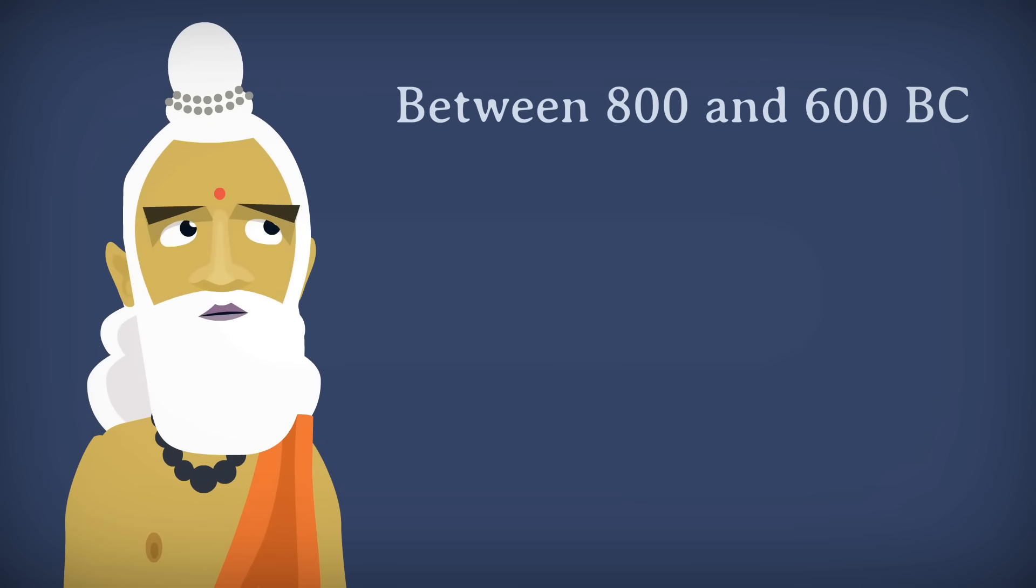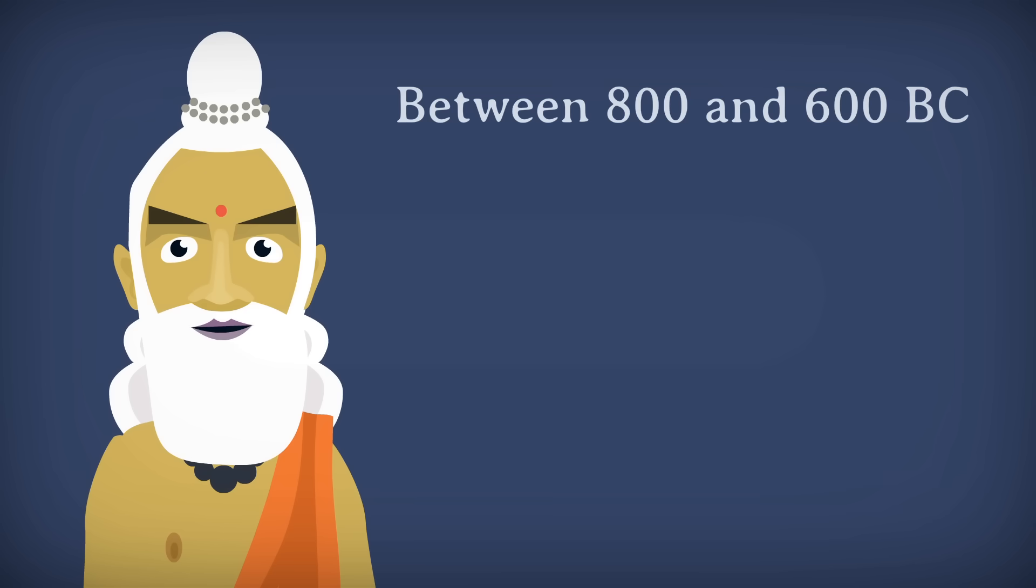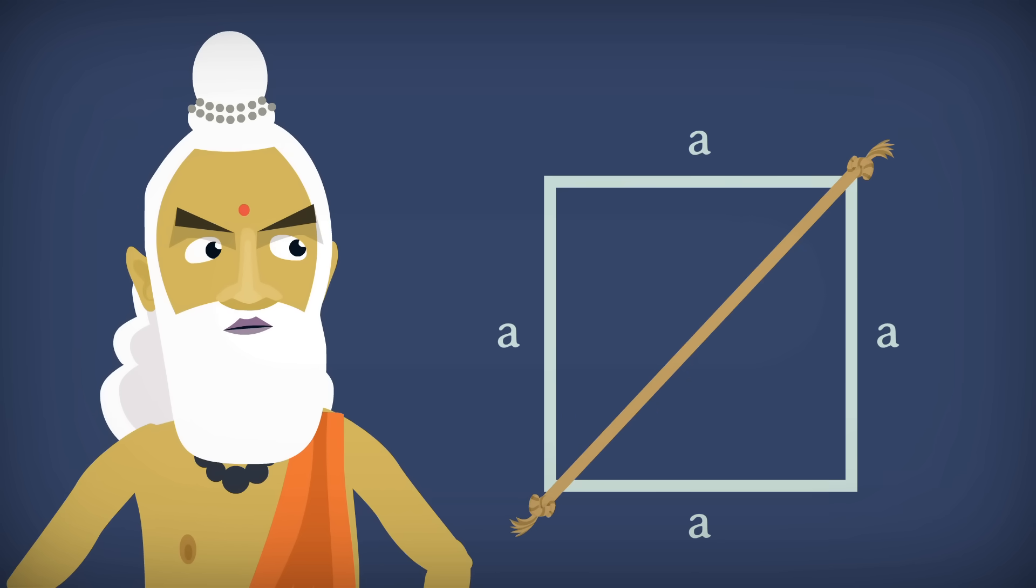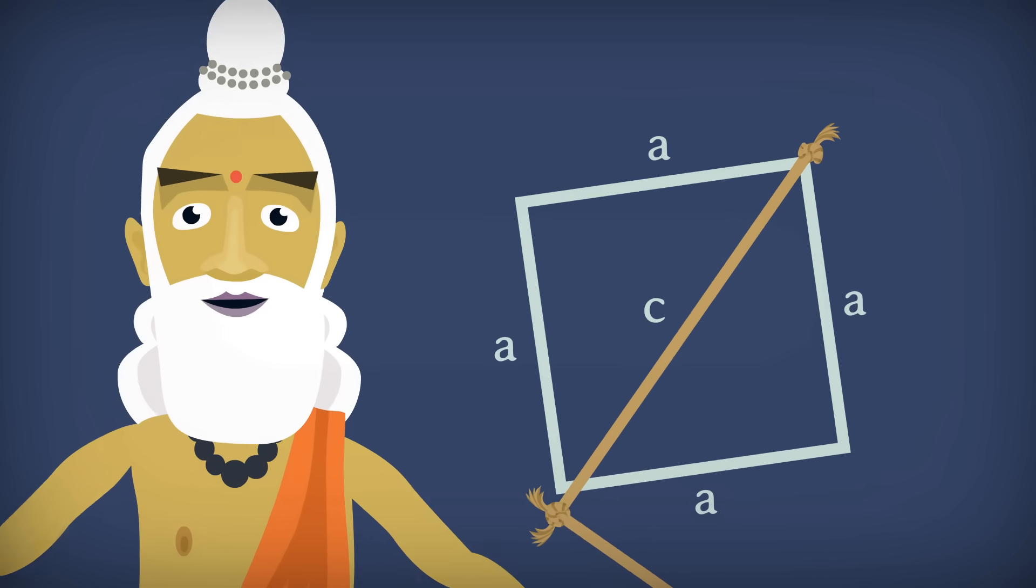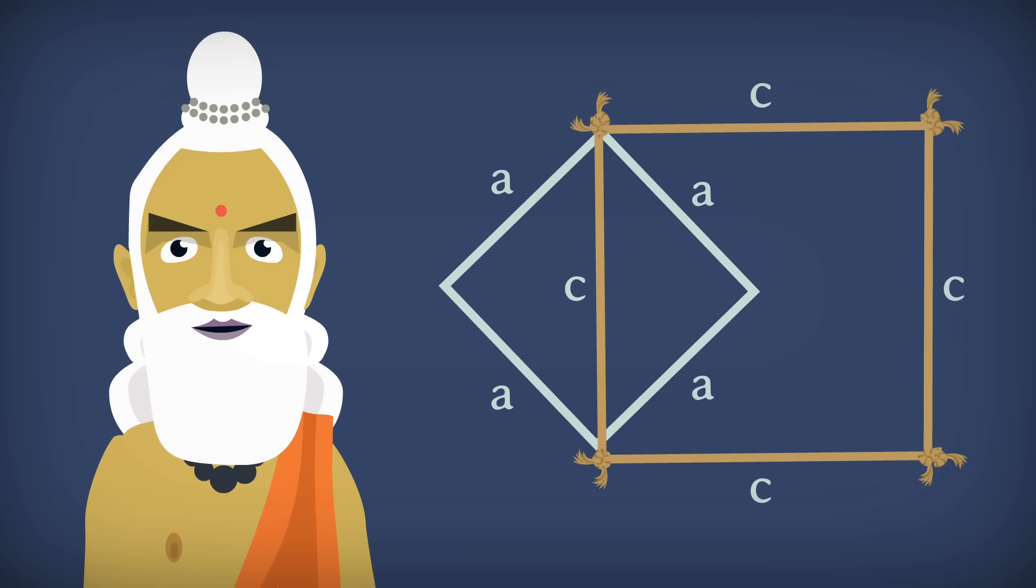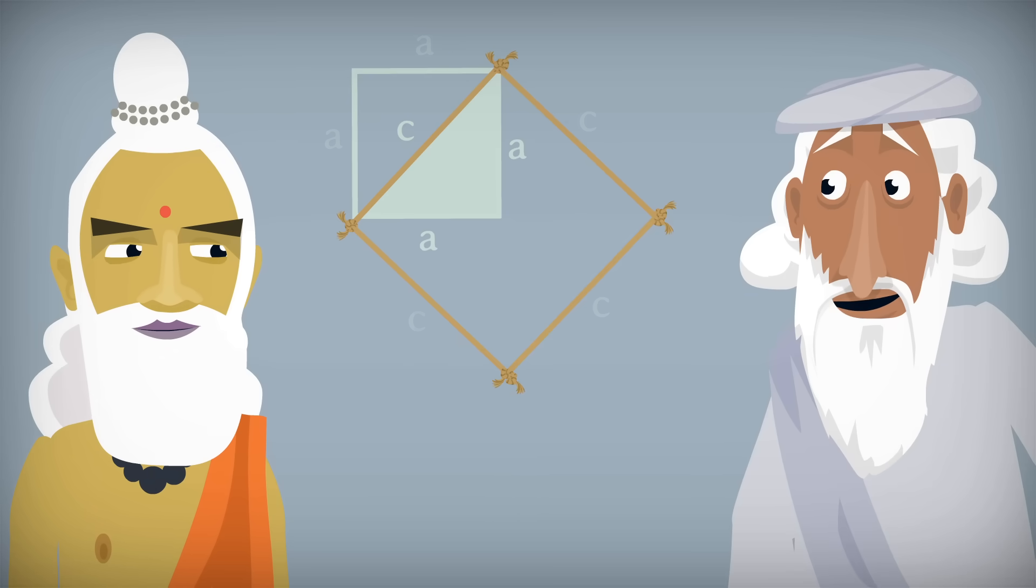And the earliest known Indian mathematical texts, written between 800 and 600 BC, state that a rope stretched across the diagonal of a square produces a square twice as large as the original one. That relationship can be derived from the Pythagorean theorem.